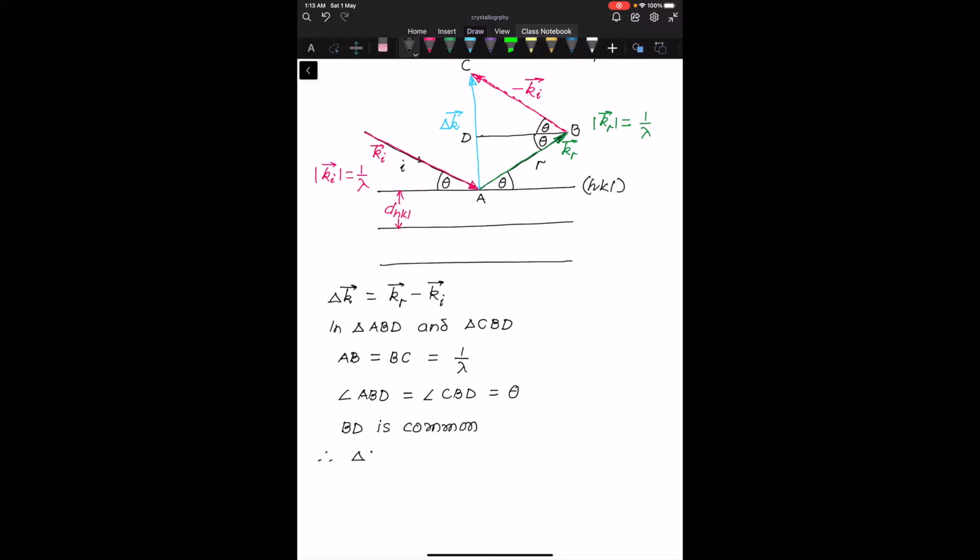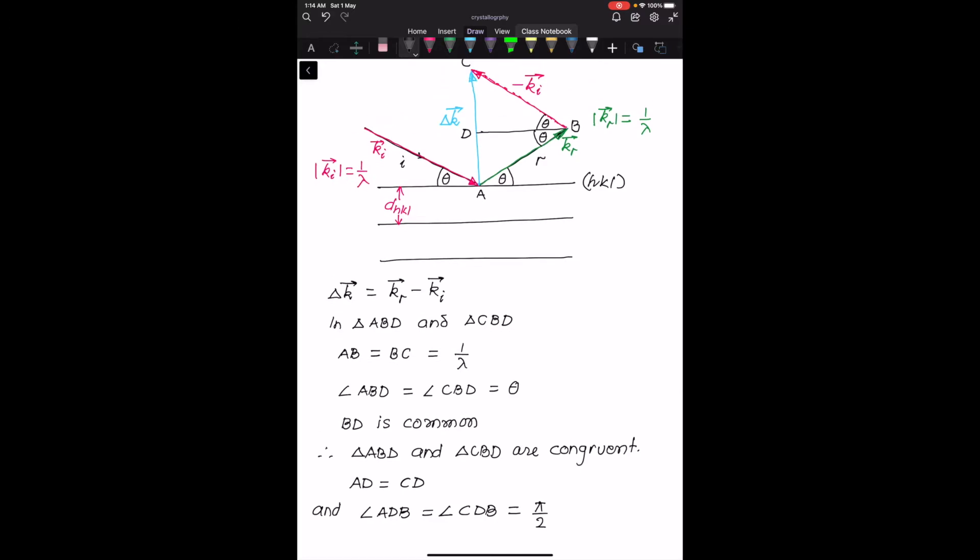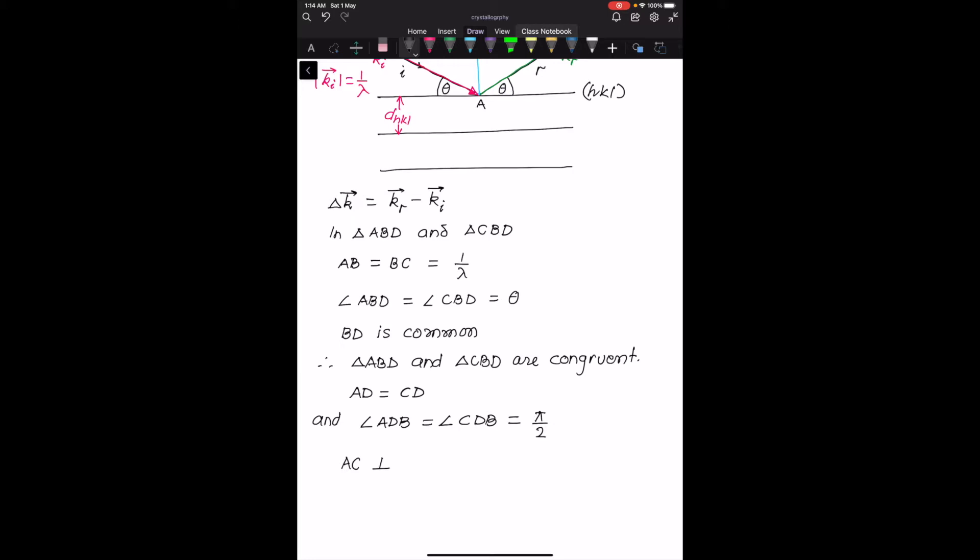Therefore, triangle ABD and triangle CBD are congruent, which immediately gives us that AD is equal to CD, and it also gives us that angle ADB is equal to angle CDB. Since the total angle is pi, both of these angles are pi by 2 or 90 degrees, which means that AC is perpendicular to BD.